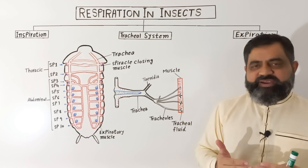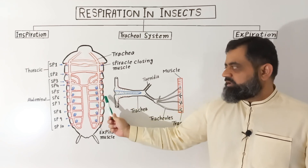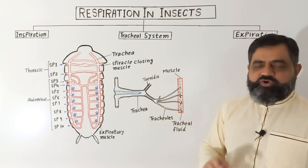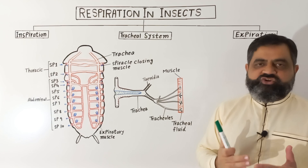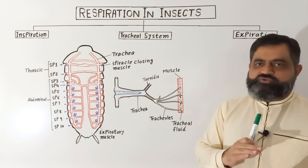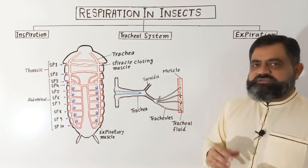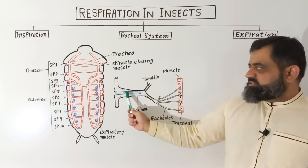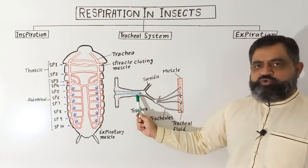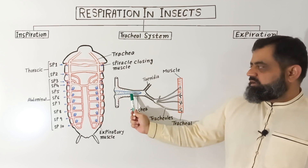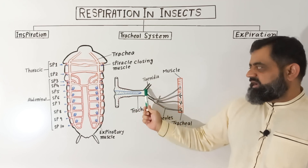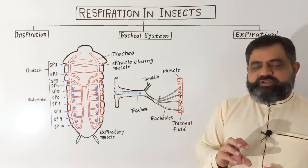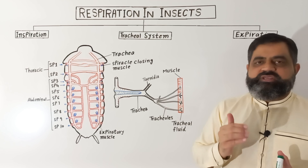To understand the tracheal system better, I have taken an example and enlarged it. This is the opening of a spiracle from where air is going to enter. At the opening there are bristles which prevent water, dust, and other particles from moving into this system — just like the hairs in our nose. This spiracle has an opening which leads into a tube-like structure known as the trachea. Alongside the trachea there are epithelial cells, and there are also rings present in the trachea which are known as taenidia, which help to avoid collapsing of these tubes during the process of inspiration and expiration — just like the rings present in our windpipe.